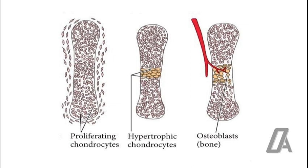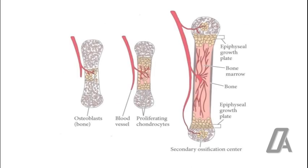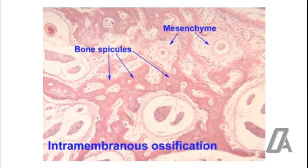Blood vessels penetrate the cartilage mass from the perichondrium. These penetrating blood vessels carry undifferentiated mesenchymal cells along with them, which get converted into osteoblasts. Osteoblasts subsequently deposit bone, bone spicules are formed, and gradually the cartilage mass is replaced by bone.